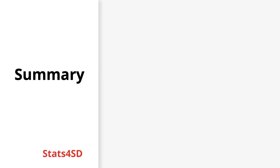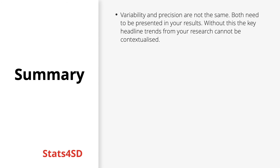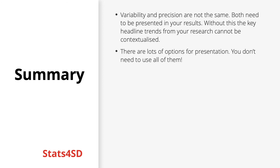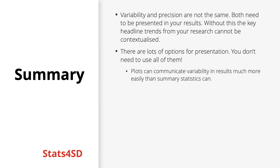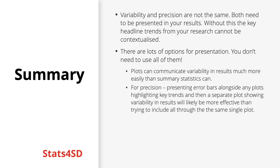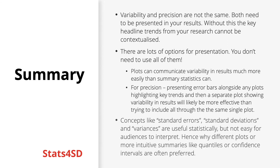Always remember to contextualize your results by presenting both variability and precision, because without that, key headline findings don't have the same level of credibility and can't be fully contextualized by your audience. You don't need to use every option — just some way of showing variability and some way of showing precision, probably through different displays and different summary statistics. For variability, plots are always a better option. For precision, you'll likely be presenting plots showing your trends and key results, so including error bars alongside those will be the most efficient approach. Really try to think about how you can explain this in a way that people will follow and understand, without having to do a lot of mental mathematics trying to remember exactly what a standard error or standard deviation is.